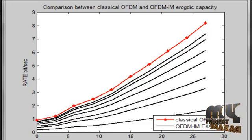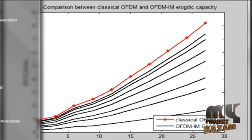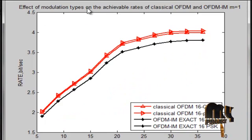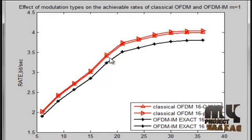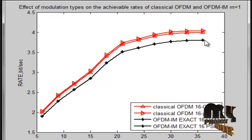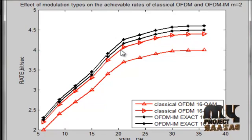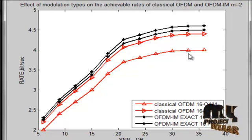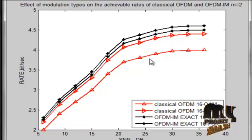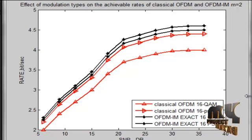We then discuss the effects of modulation type on achievable rate for classical WAVDM and WAVDM-IM when M equals 1, showing classical WAVDM-IM with 16-QAM and 16-PSK, and WAVDM-IM exact with 16-QAM and 16-PSK. When M equals 2, we again compare classical WAVDM-IM 16-QAM and 16-PSK results. These are the performance analysis results of the product.